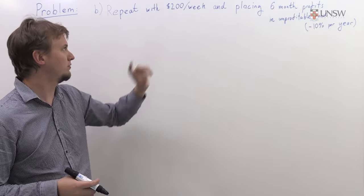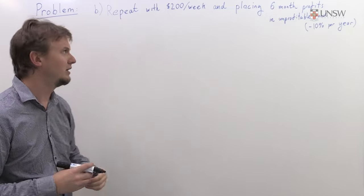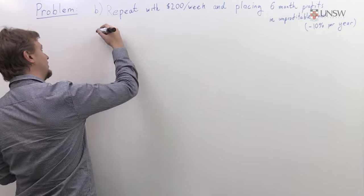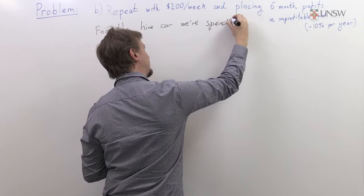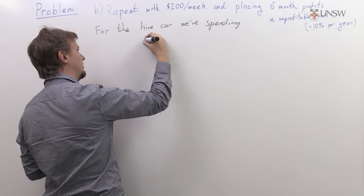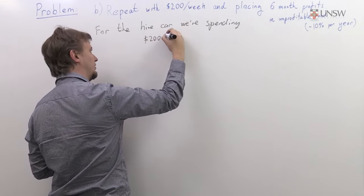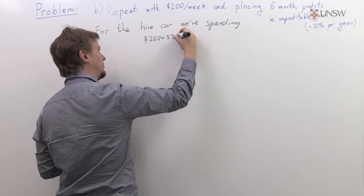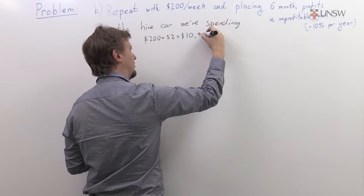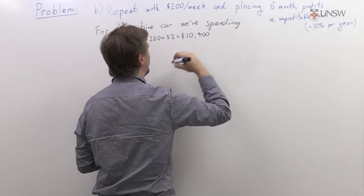I need to convert this $200 per week to an amount of money per year. For that hire car, we're spending approximately 52 weeks in a year, so 200 times 52 is $10,400 per year.